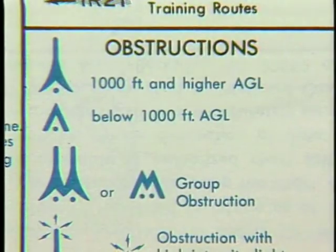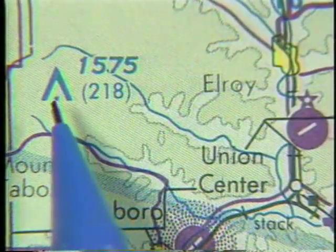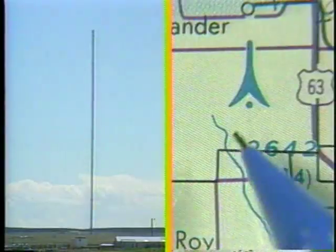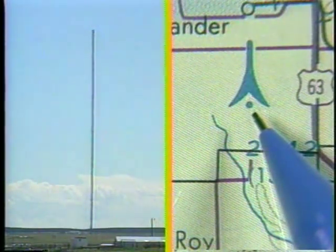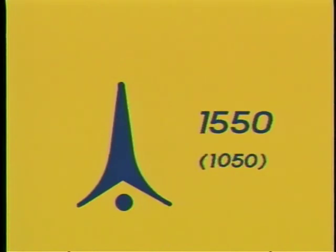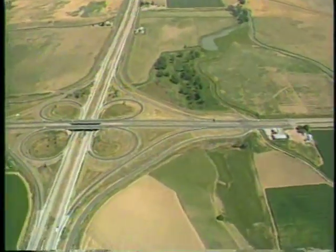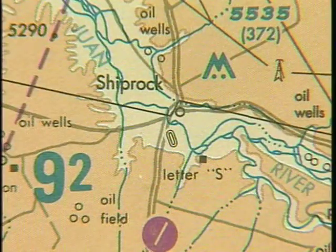Additional information found on the chart concerns obstructions. One symbol is for obstacles less than 1,000 feet AGL, and another symbol is for obstacles 1,000 feet AGL and above. Printed next to the symbol is the height of the structure above sea level, and in parentheses is its height above the ground. If the structure has high-intensity lighting, the lighting symbol is included. In addition to towers, roads and highways make good landmarks for navigation — they are indicated by solid gray lines.